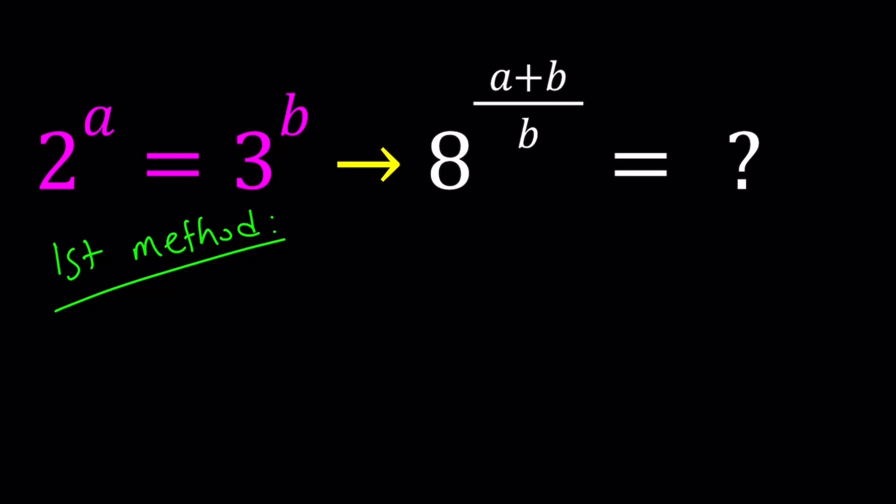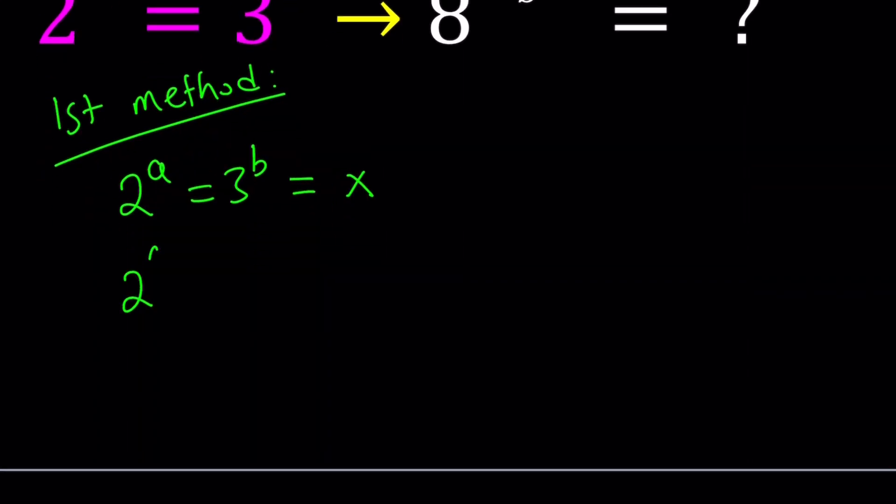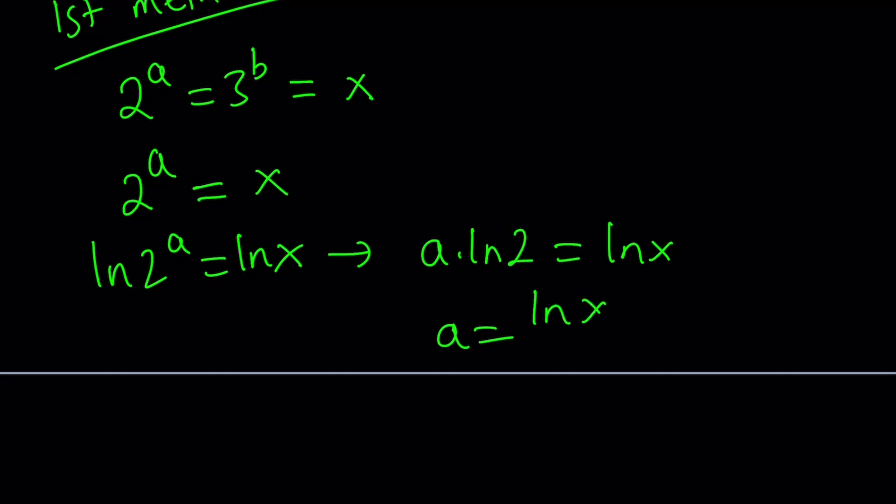So for my first method, I'm going to set both of these equal to x. Any variable is fine. And then take a look at each one of these, 2 to the power a equals x. Let's take the natural logarithm of both sides. So we have ln 2 to the power a equals ln x, which implies a times ln 2 equals ln x. And finally we can write a as ln x over ln 2. You could also use the change of base formula and get the same thing.